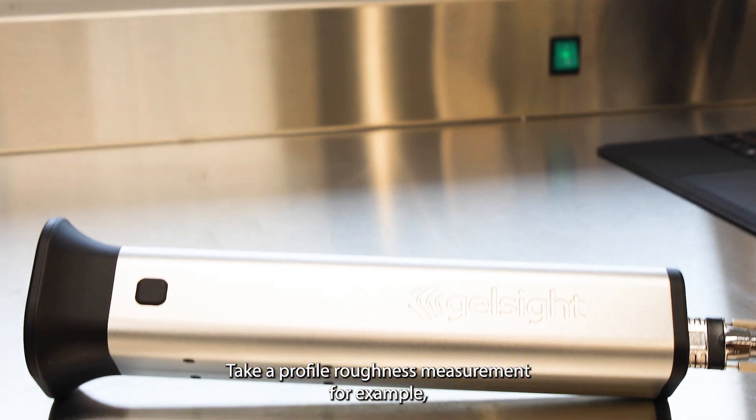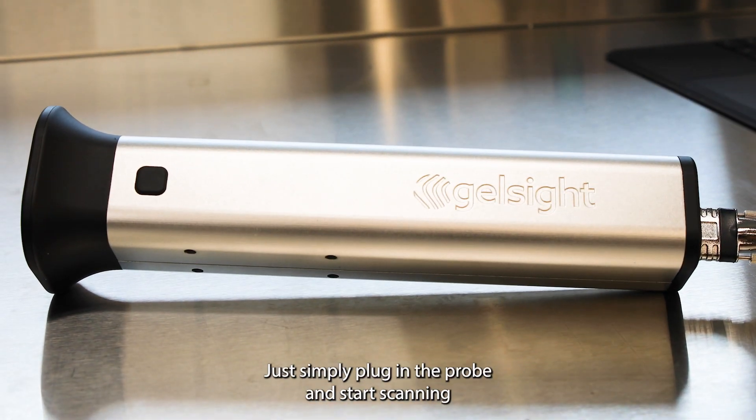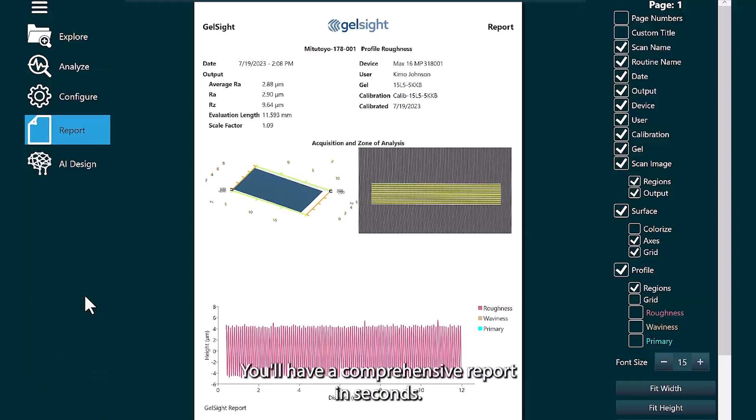Take a profile roughness measurement, for example. With GelSight MAX, just simply plug in the probe and start scanning. You'll have a comprehensive report in seconds. That's it.